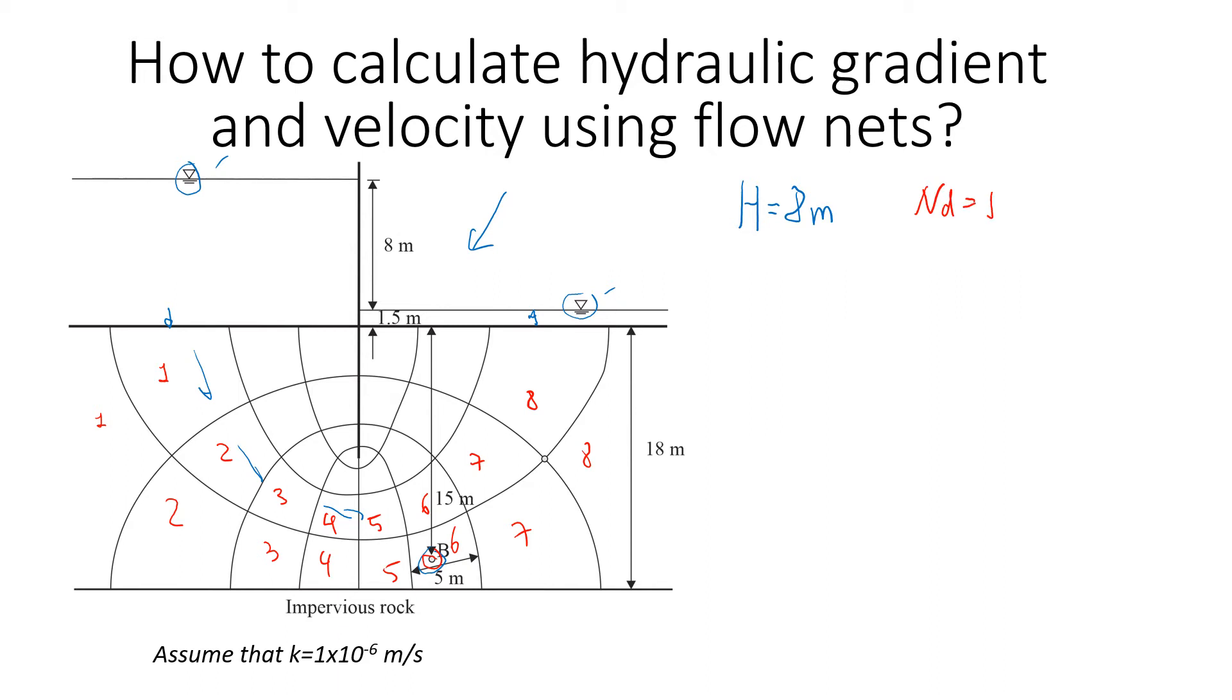Now we need to find the total head loss for each equipotential drop, and we use delta h for this. So it's equal to h divided by number of drops, which is 8 divided by 8, equal to 1 meter. This means for each equipotential drop, when water flows through each drop, it's going to lose 1 meter of total head.